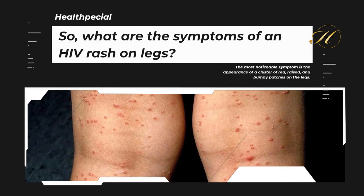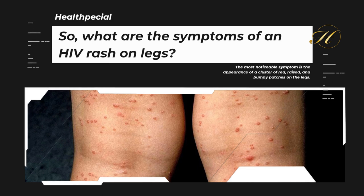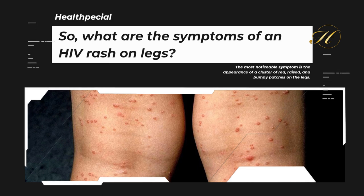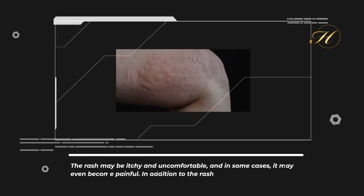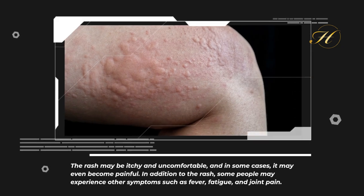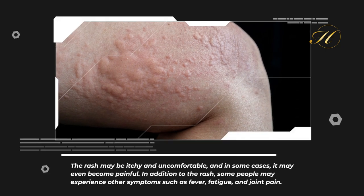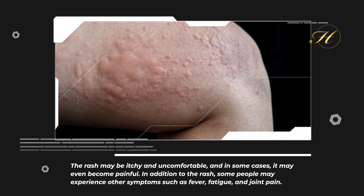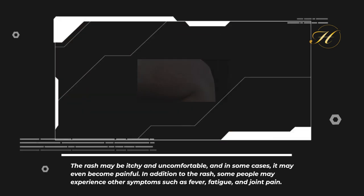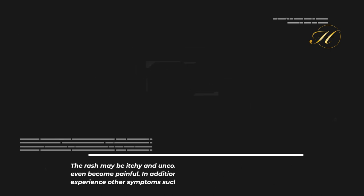What are the symptoms of an HIV rash on legs? The most noticeable symptom is the appearance of a cluster of red, raised, and bumpy patches on the legs. The rash may be itchy and uncomfortable, and in some cases it may even become painful. Some people may also experience other symptoms such as fever, fatigue, and joint pain.